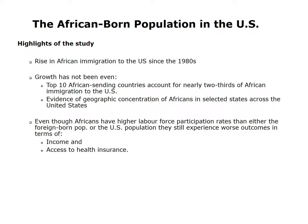We can therefore note that there has been a significant rise in African immigration to the United States since the 1980s. However, this growth has not been even — the top 10 sending countries account for nearly two-thirds of African immigration. There is also evidence of geographic concentration in selected cities. Furthermore, even though Africans have higher labor force participation rates than either the foreign-born or the US population overall, they still experience worse outcomes in terms of income and access to health insurance.